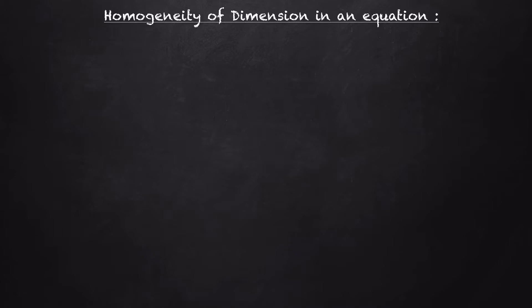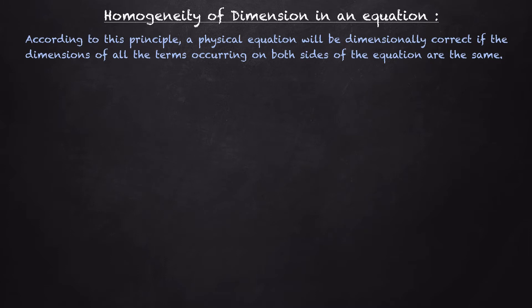In this video we are going to learn about homogeneity of dimension in an equation. According to this principle, a physical quantity will be dimensionally correct if the dimensions of all the terms occurring on both sides of the equation are the same. Let's consider an example.